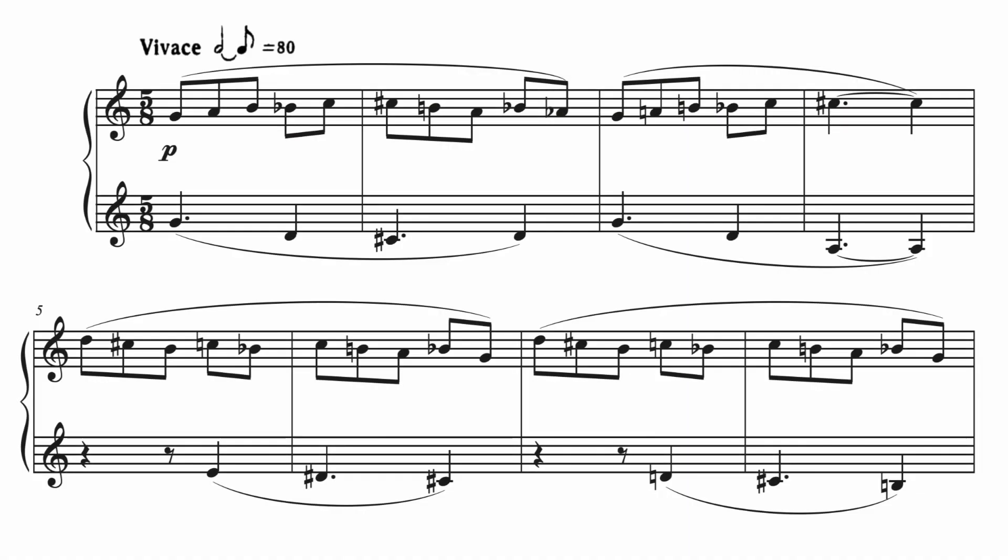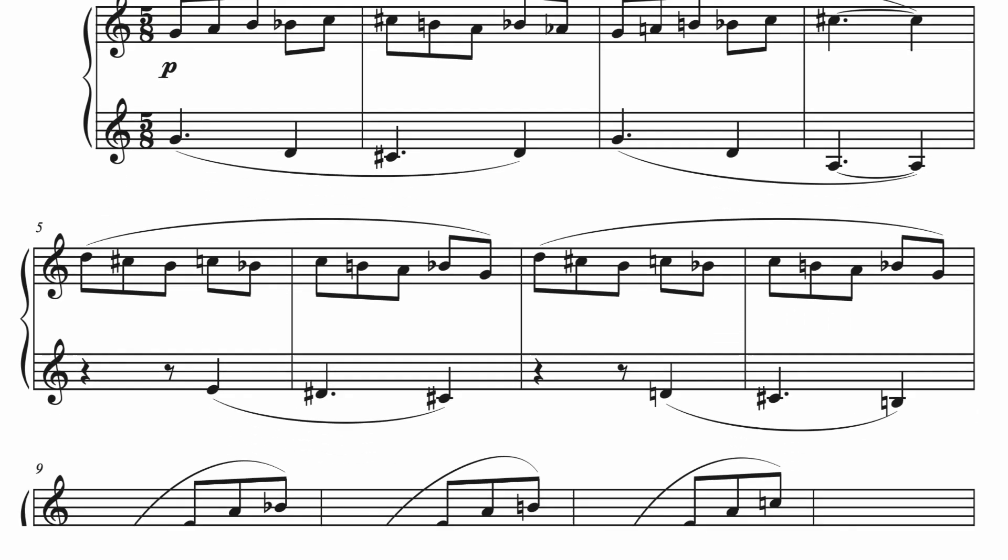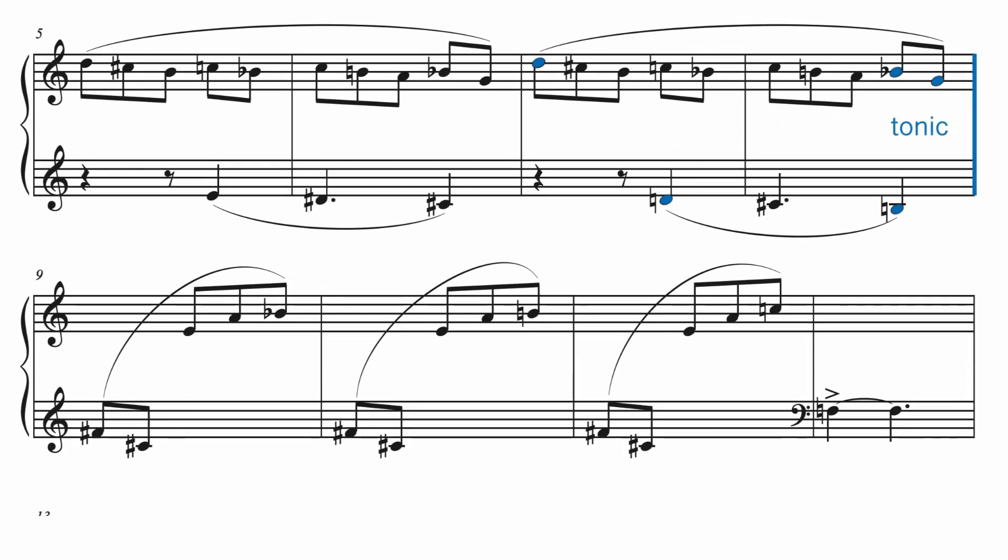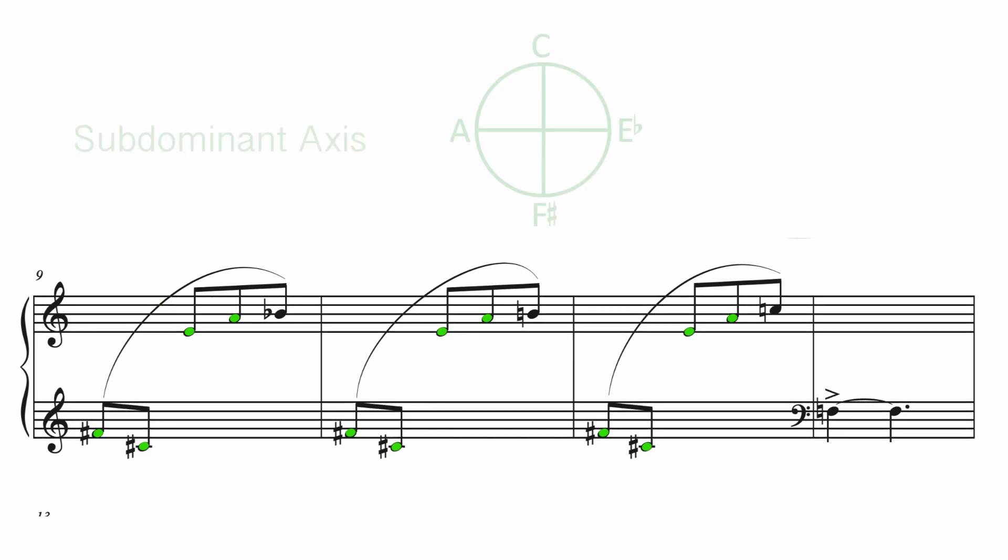Let's go ahead and move forward now to that new area that I was calling a bridging section, starting in measure 9. While the earlier section ended with clear tonic implication, we find something quite different in this new section. The G has moved a half step down to F sharp in measure 9. And for that, we should refer to the subdominant axis of symmetry.